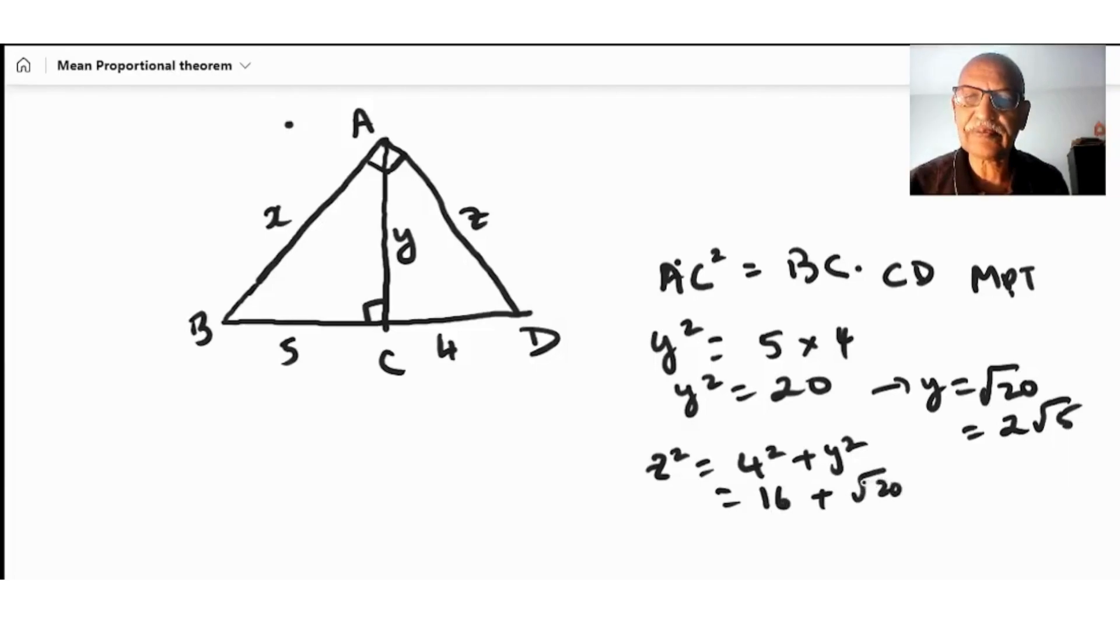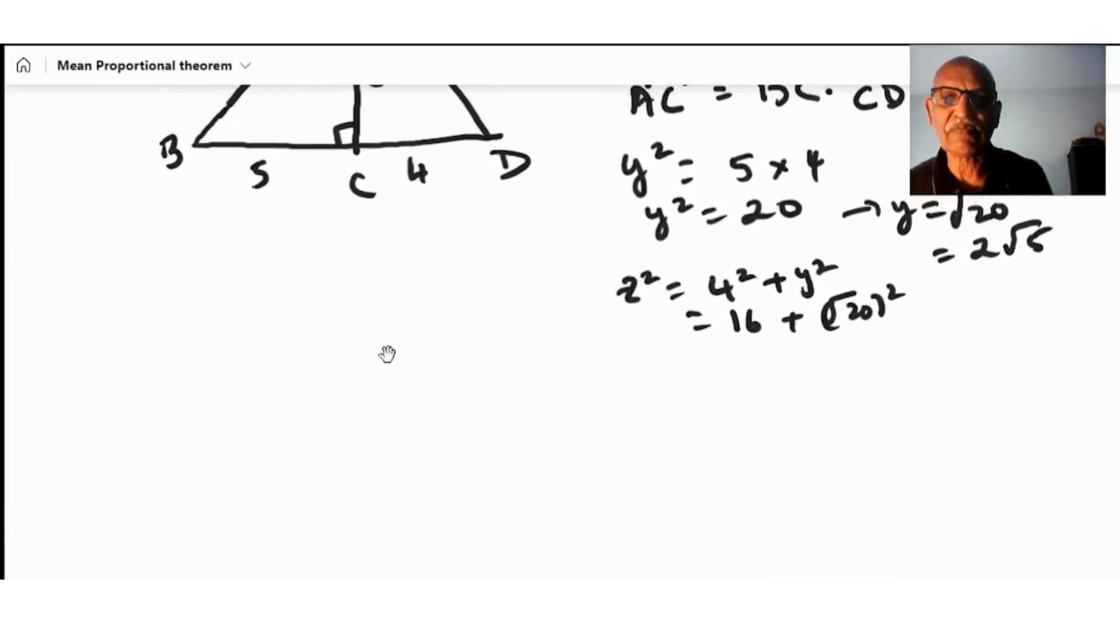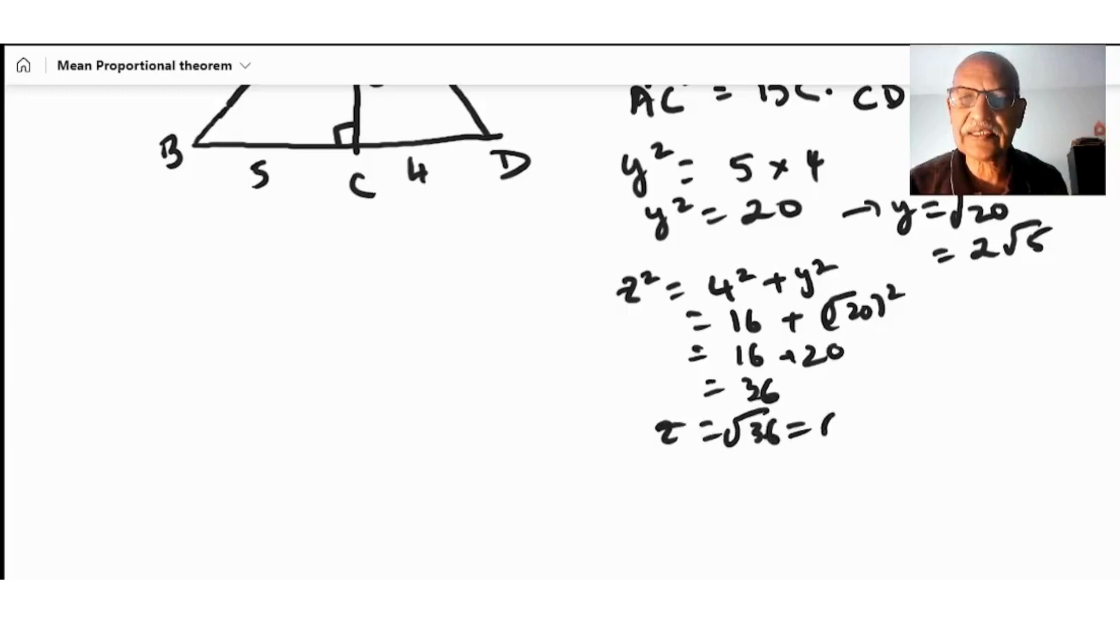z squared equals 16 plus square root of 20 squared, which is 16 plus 20, which is 36. So z equals square root of 36, which is 6. We only take the positive square root.